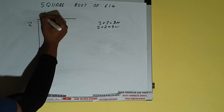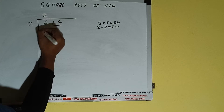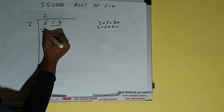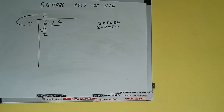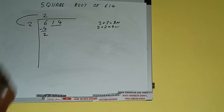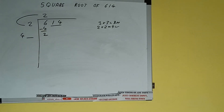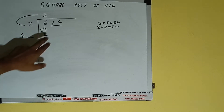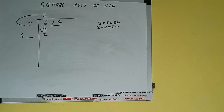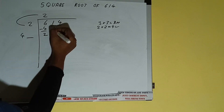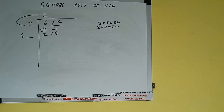So 2 here and 2 here — 4 subtract — 2 will be left. We did 2 into 2, so add both: 2 plus 2 will be 4. Write it here and keep one digit extra. This number we need to make it big, so bring the next pair down and it will be 214.